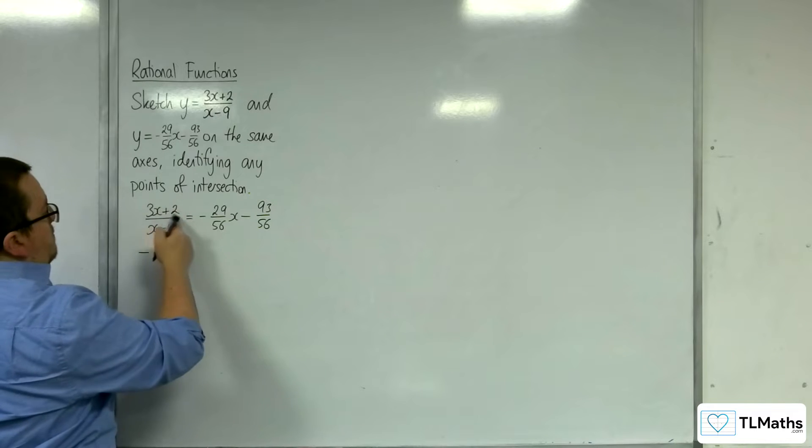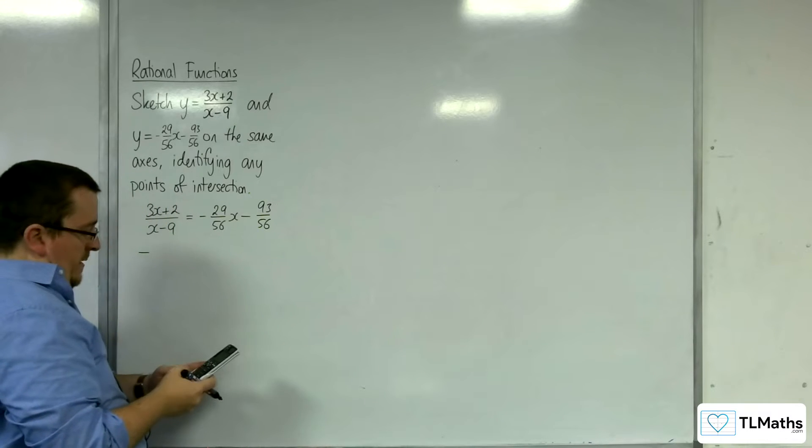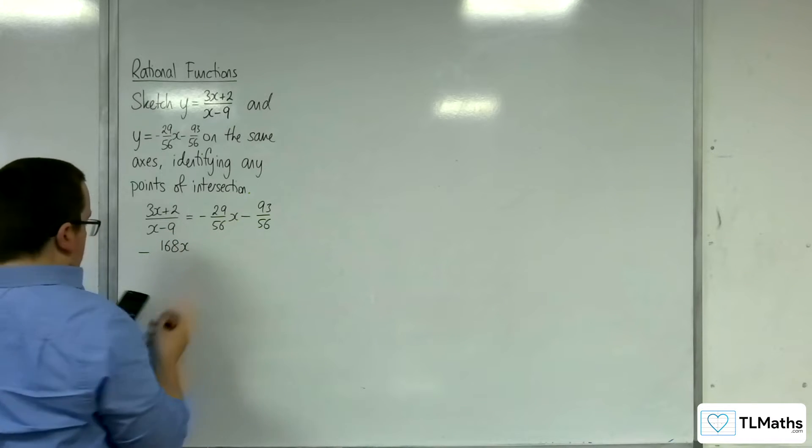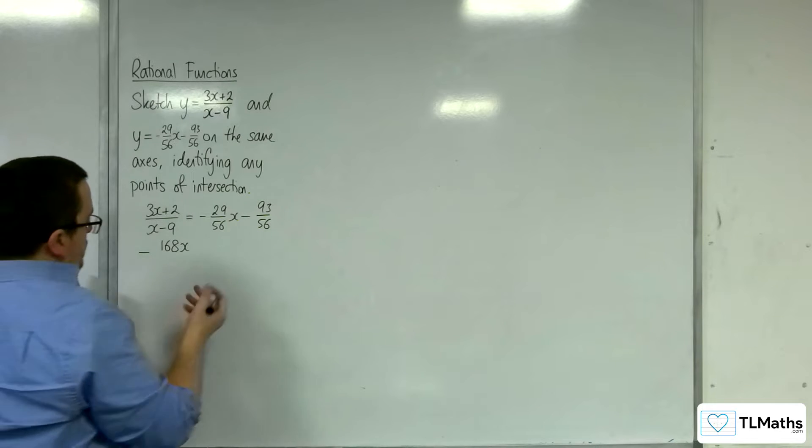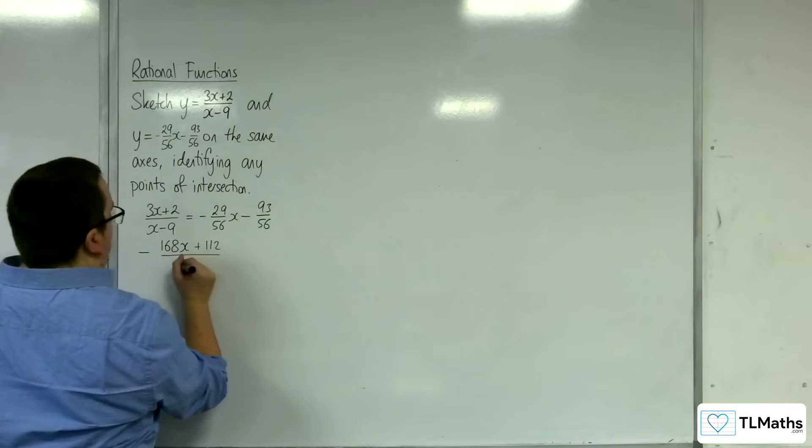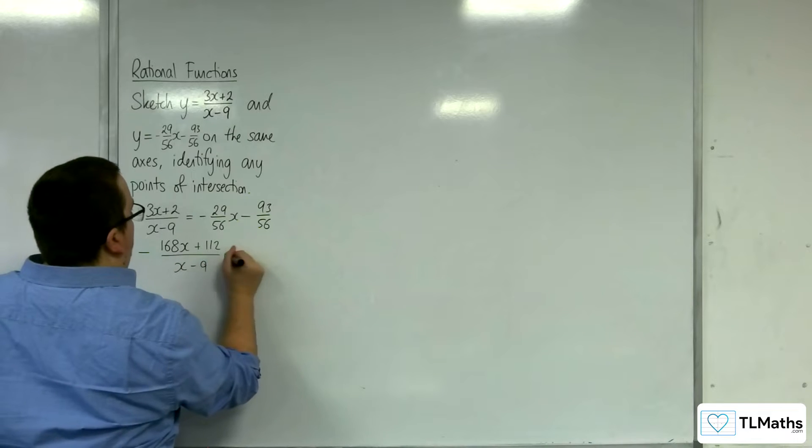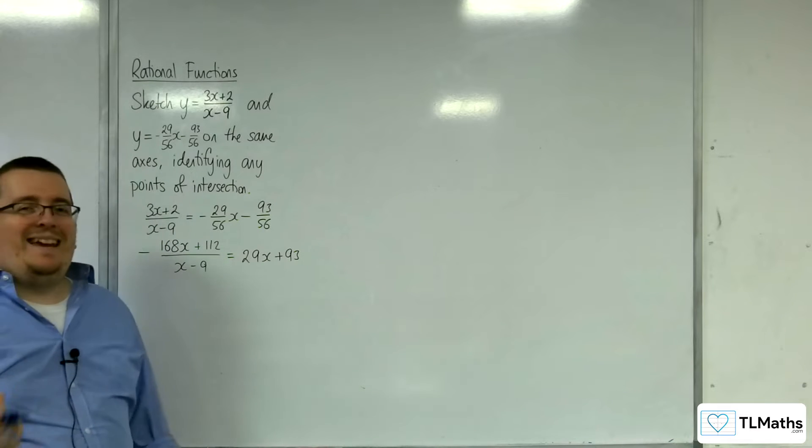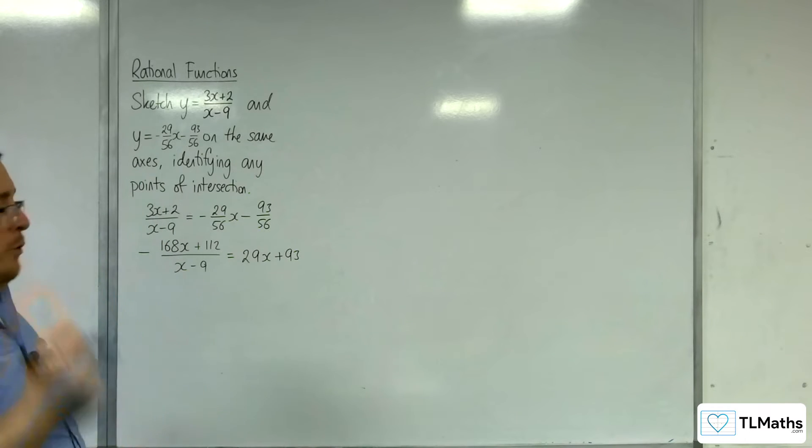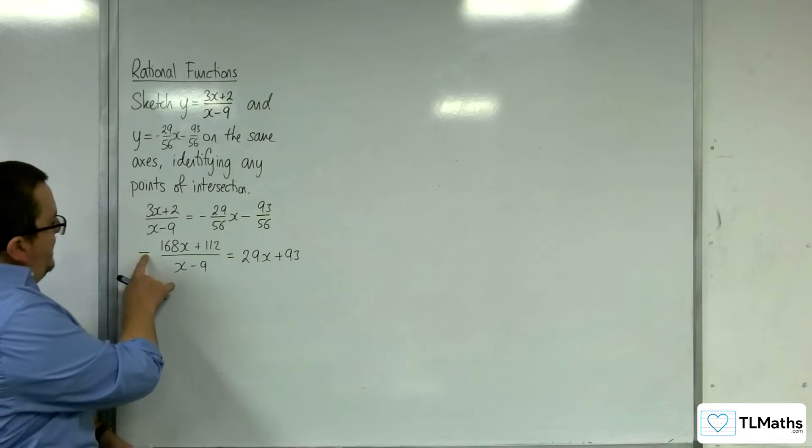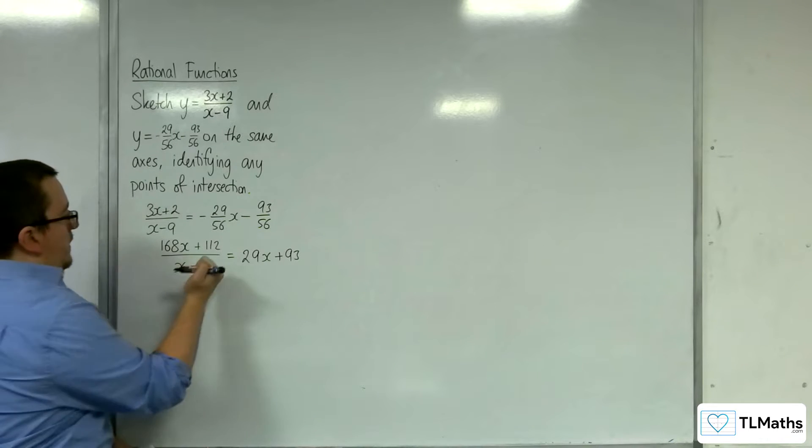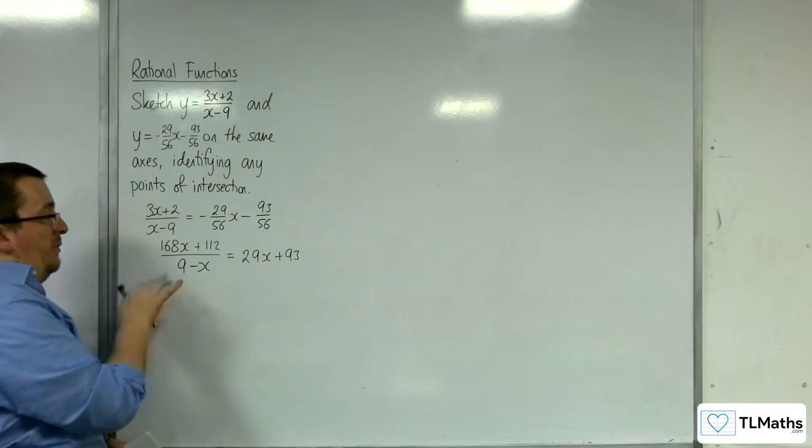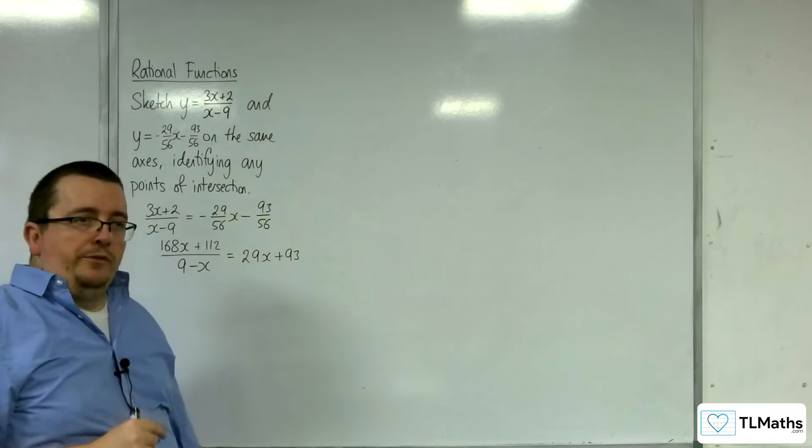So what I'm going to get is the minus and the 56 is going to multiply with the 3 and the 2. So 3 lots of 56 is 168, so minus 168x, and then 2 lots of 56 is 112, so plus 112 over the x minus 9 is equal to 29x plus 93. So that makes it a little bit nicer to work with. What I'm also going to do is bring that minus sign into the denominator and write that as 9 minus x.